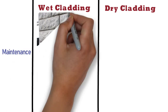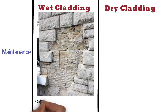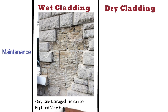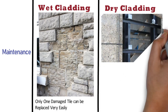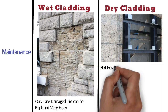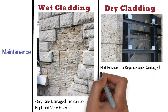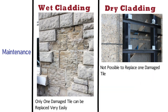Maintenance: In case of wet cladding, only one damaged tile or stone can be replaced very easily. Whereas in case of dry cladding, it is not possible to replace just one damaged tile or stone. So when one tile fails, many of the tiles or stones shall be removed and fixed again.